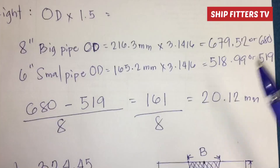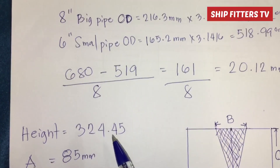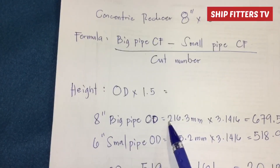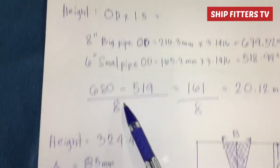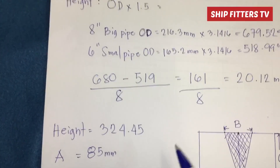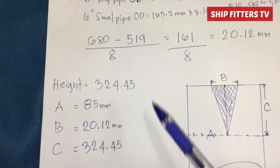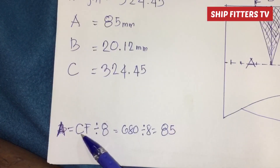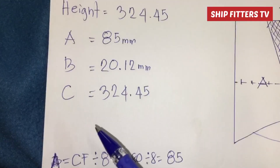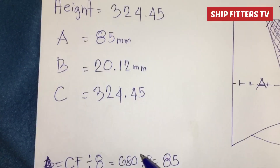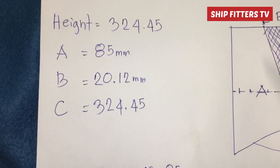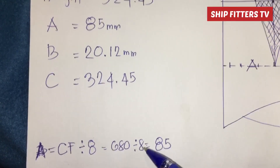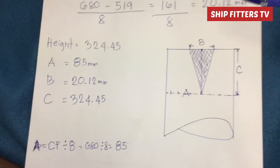For the height, the formula is: big pipe OD 216.3 times 1.5 equals 324.45 mm. For the number of cuts, take the big pipe circumference of 680 divided by 8, because we need 8 cuts, which equals 85. So each division around the circumference is 85 mm apart.